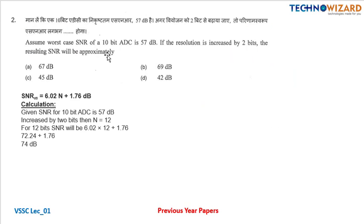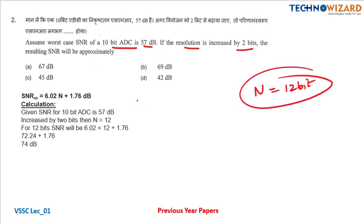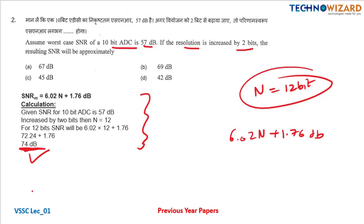The next question: assume worst case SNR of a 10-bit ADC. N is equal to 10 bit, where SNR will be 57 dB. If the resolution is increased by two bits, now N will be equal to 12 bit. The SNR formula is 6.02 into N plus 1.76 dB. Here N is equal to 12 bit, so 6.02 into 12 plus 1.76 gives you 74 dB as the correct answer. You have to choose the approximate answer, so 69 dB can be chosen, but 74 dB is the correct answer.